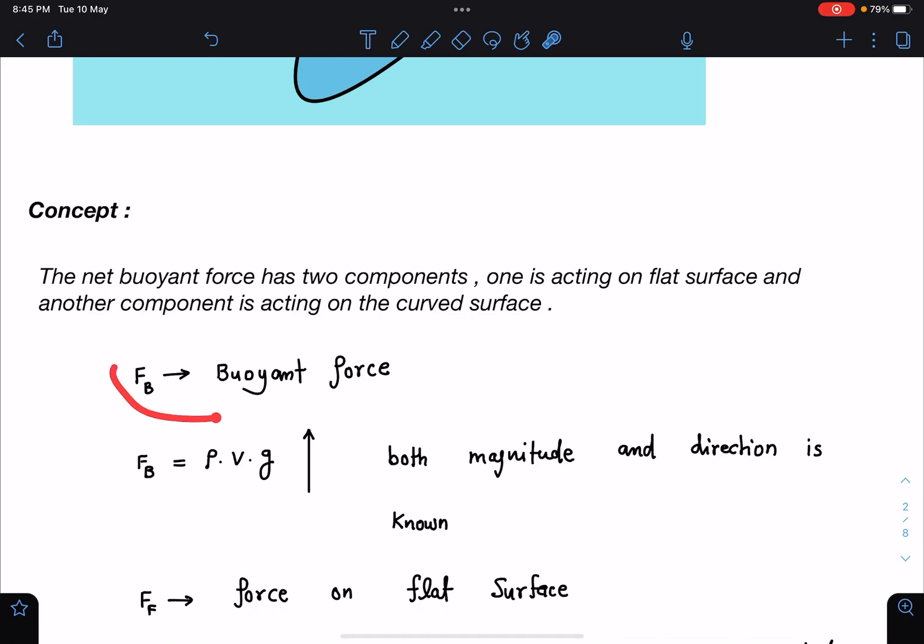Here we can say this buoyant force, its magnitude is known to us and direction also. So it is ρ liquid into volume of solid immersed into g and it is opposite to gravity. Both magnitude and direction are known to us for this factor and I am calling FF as force on flat surface.